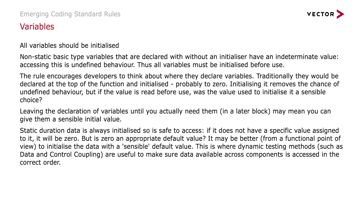All variables should be initialized. Non-static basic type variables declared without an initializer have an indeterminate value, and accessing these is undefined behavior — thus all variables must be initialized before use. The rule encourages developers to think about where they declare variables. Traditionally we might put declarations at the top of the function and initialize them perhaps to zero, but leaving the declaration until you actually need the variable — in a later block perhaps — may mean you can give it a sensible initial value. Static duration data is always initialized and always safe to access; if it doesn't have a specific value it will be zero, but is zero an appropriate default? It may be better to initialize data with a sensible default. Dynamic testing methods such as data and control coupling are useful to make sure data available across components is accessed in the correct order.